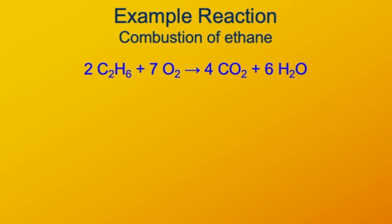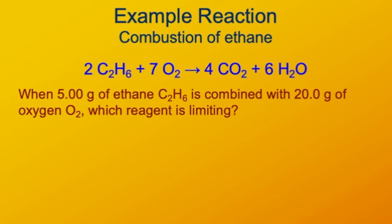Now we'll start with masses, because masses are what we most commonly encounter in the lab — they're what we can measure with a balance. We'll say we have 5 grams of ethane and 20 grams of oxygen, and let's see which one is limiting. We can start with ethane, see how much oxygen is required to react with 5 grams of ethane, and see if the 20 grams we have is more or less. If it's more, oxygen is in excess; if it's less, oxygen is limiting.